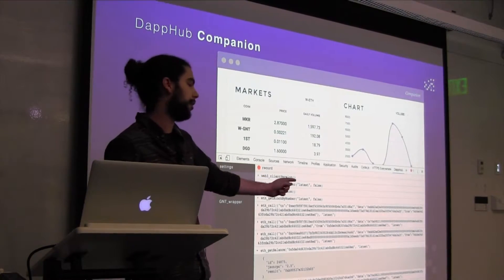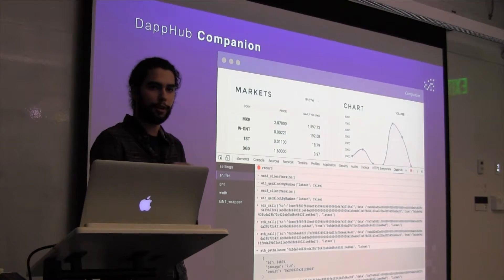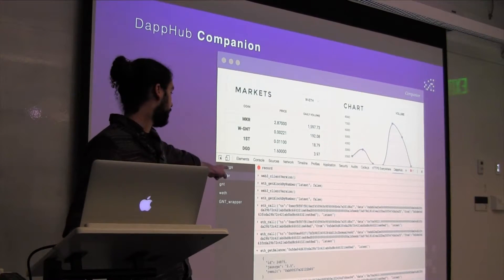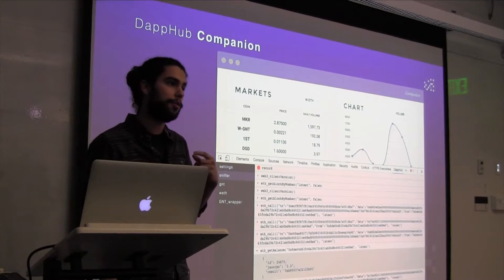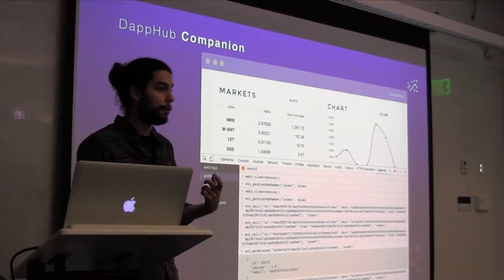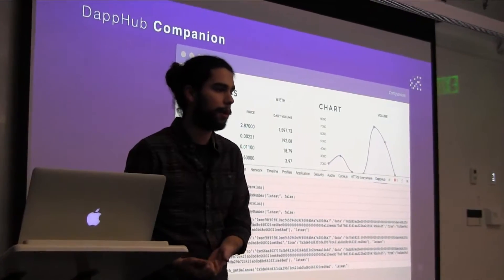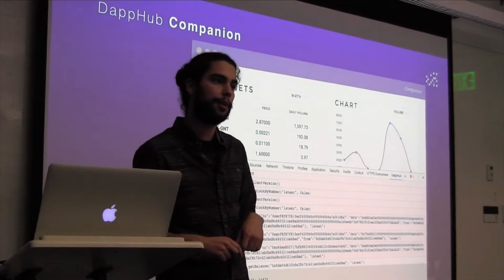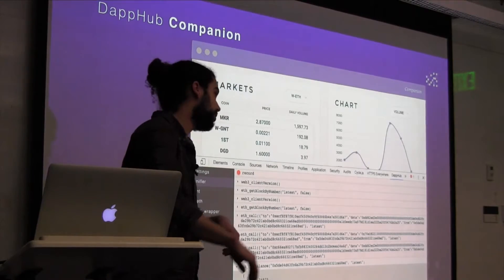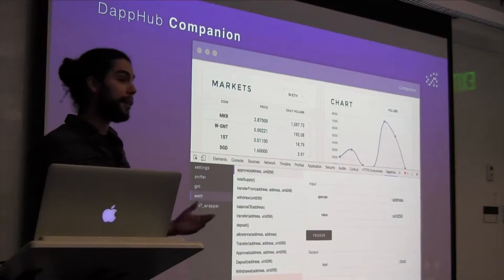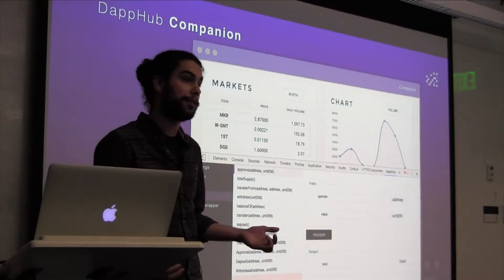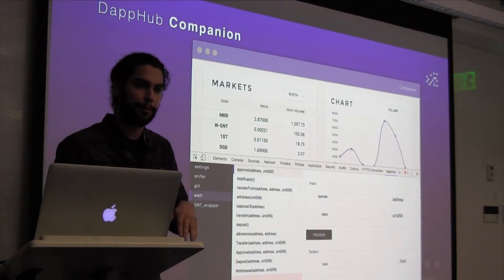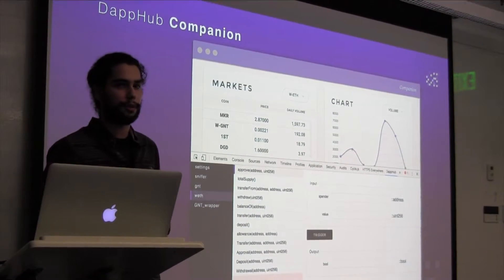The first thing it does is it's got a little Web3 sniffer — you can see calls that are going to MetaMask or to your local node. The next thing, as you can see down here, are these contract names. What it's doing is reading either the ERC-190 registry that's been set up, or when you publish things to the blockchain using DAPL, you push your data to our servers and it displays ABIs and stuff. So it's like a universal smart contracts interface for any website — you can go to any website, open this up, see all the smart contracts that Web3 is talking to, interact with them, and trigger calls.